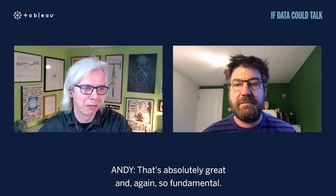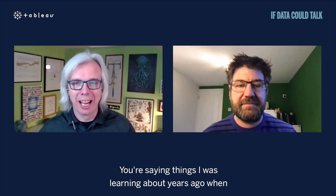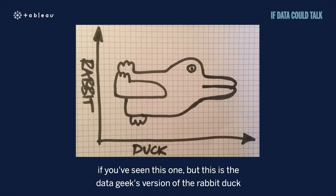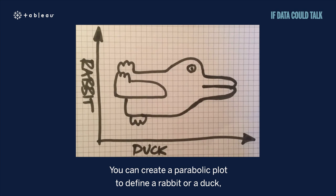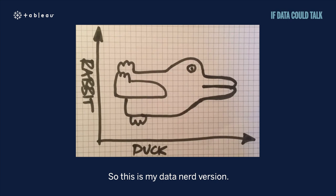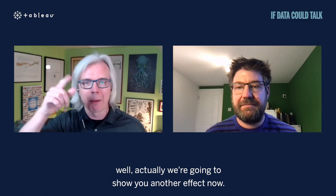This is fundamental to data visualization. Here's a data geek version of the duck-rabbit illusion — you can create a parabolic plot that defines a rabbit or a duck depending on which way you want to look at it. Before we go further, let's show you another effect — the trick that triggered Andy's interest in all of this.